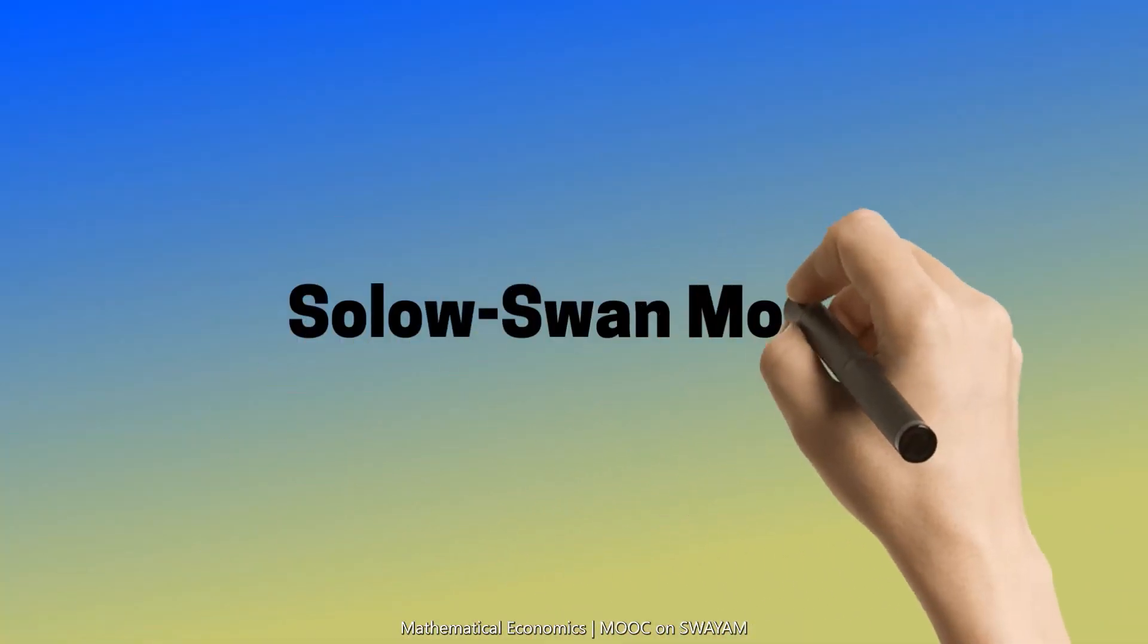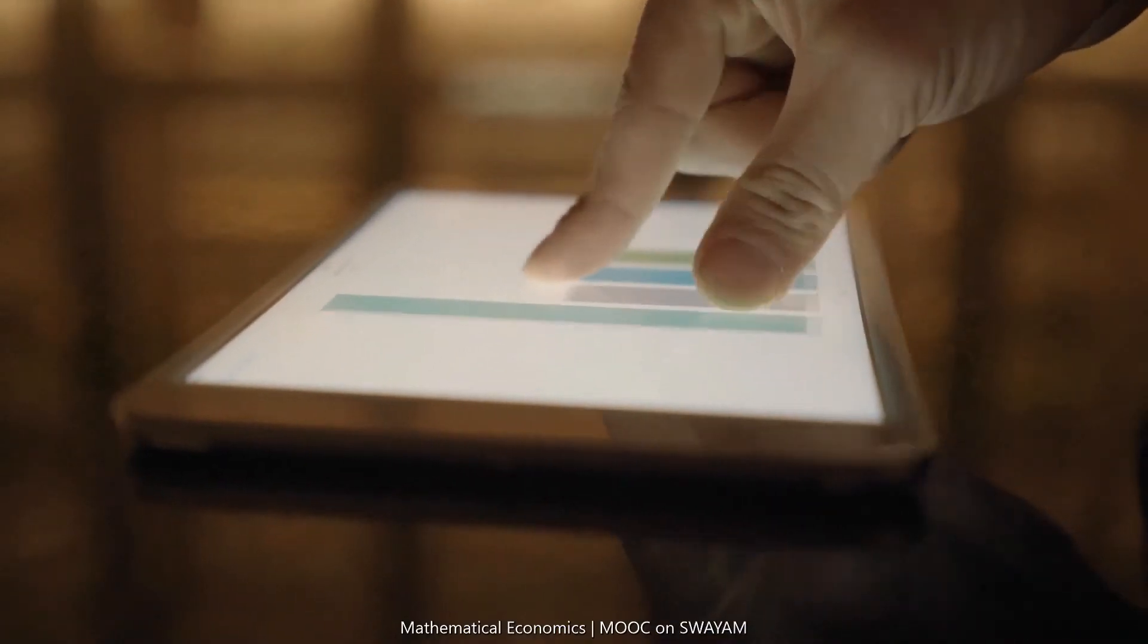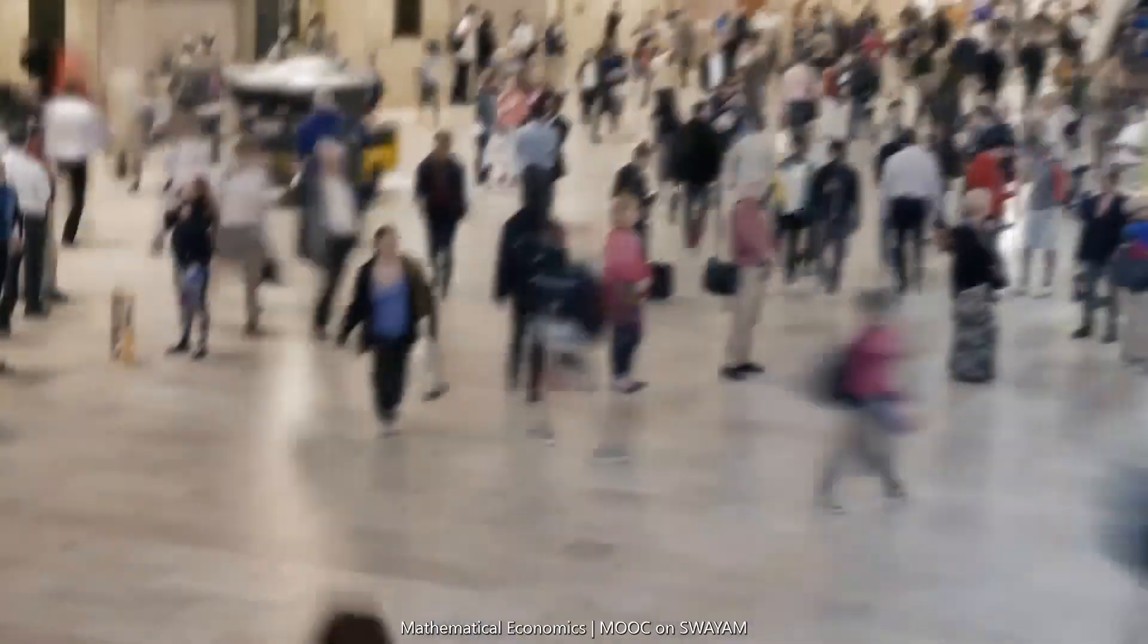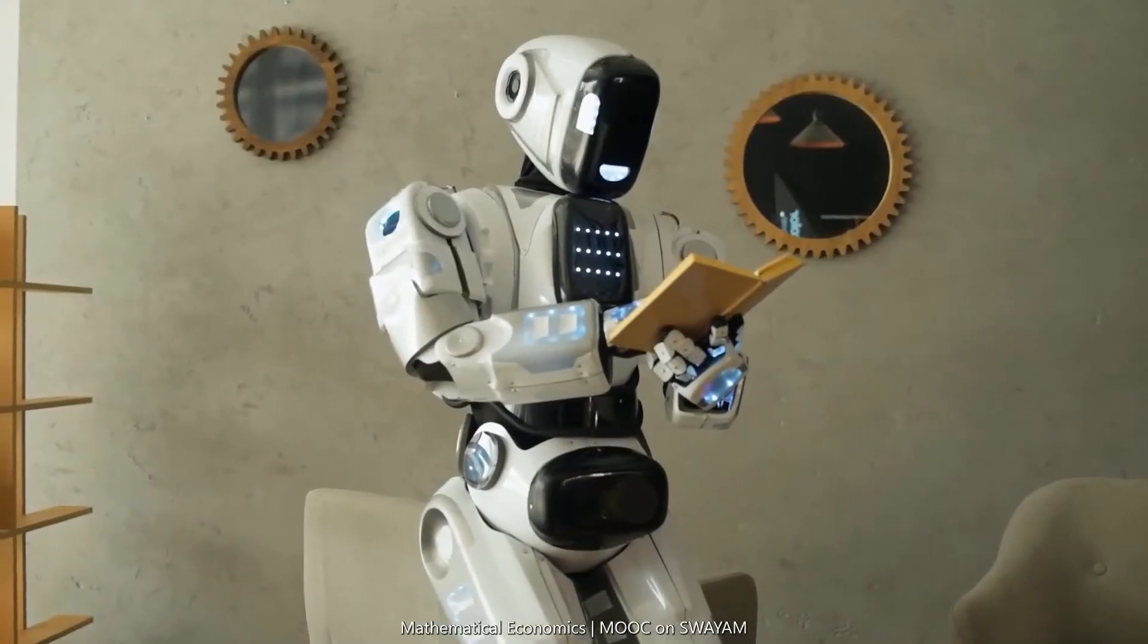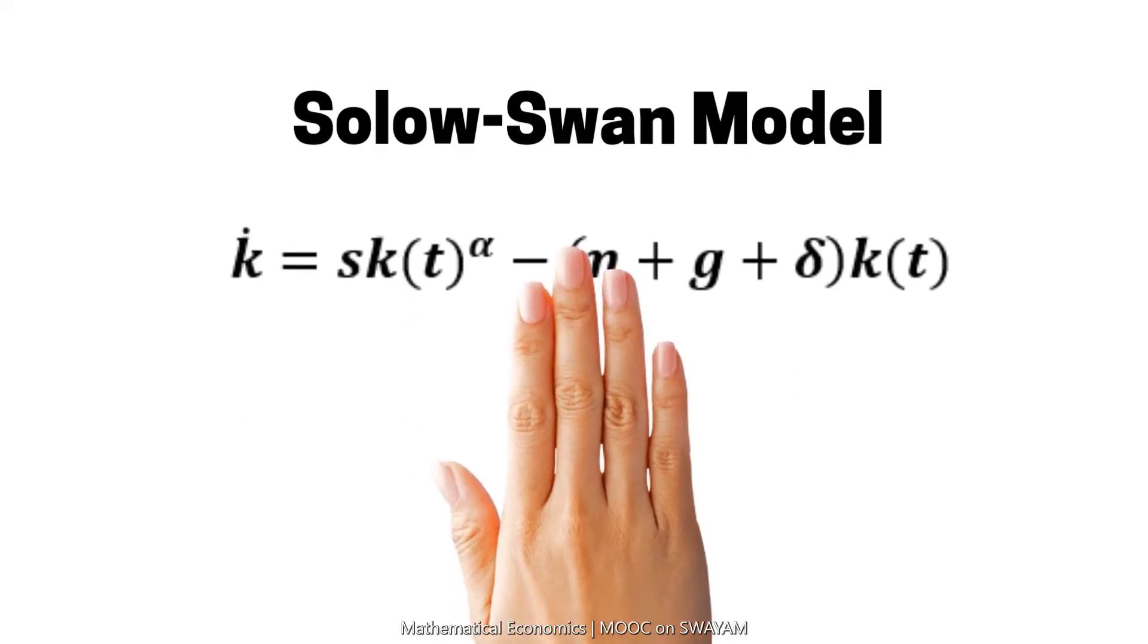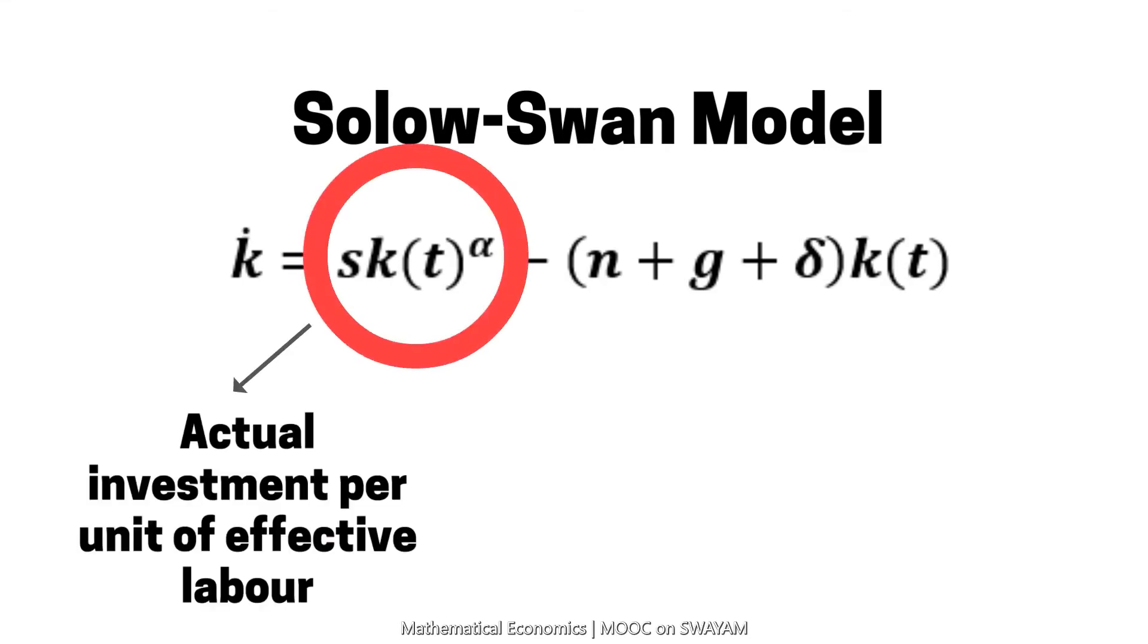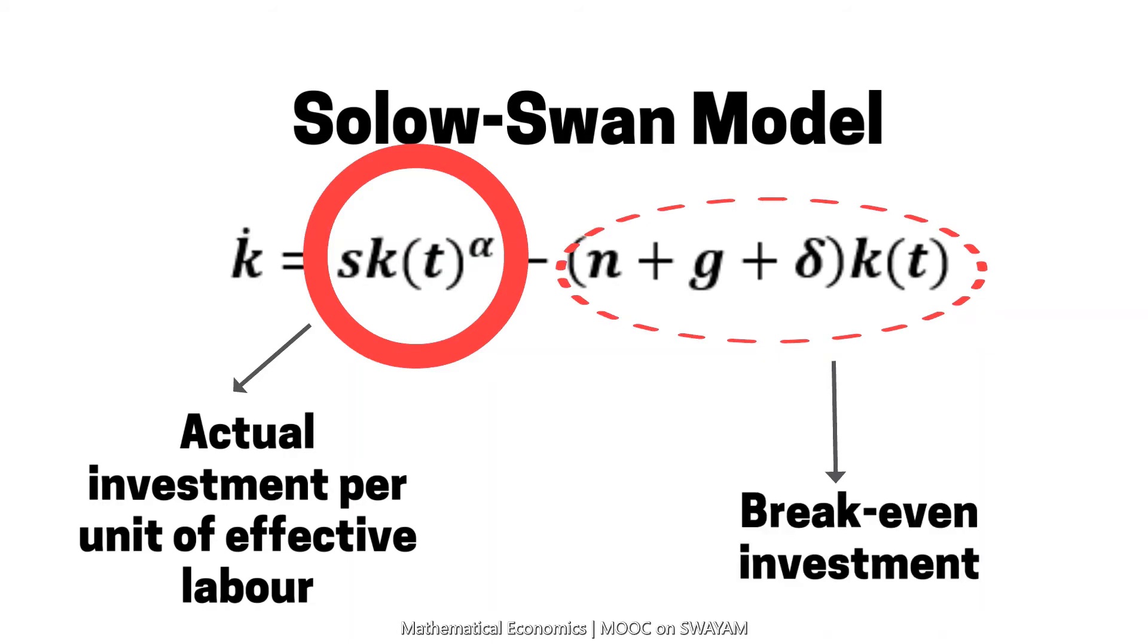The Solow-Swan model explains long-run economic growth by considering capital accumulation, population growth, and technological progress. The equation is k̇ = sk(t)^α - (n + g + δ)k(t), where k is capital stock per unit of effective labor, α is elasticity of output with respect to capital. The term sk(t)^α is actual investment per unit of effective labor. The term (n + g + δ)k(t) is the breakeven investment.